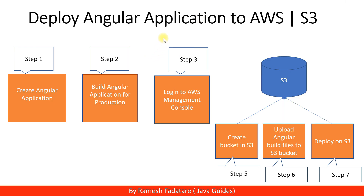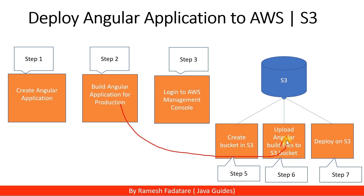Let's get started and look at the deployment process steps. First, we create the Angular application. Once we create it, the next step is to build the Angular application for production. Then we log into the AWS console and create a bucket in S3. After that, we upload all the Angular build files to the S3 bucket.